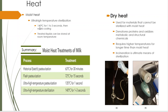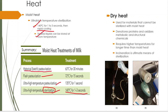Ultra-high temperature: 140°C for 1–3 seconds, then cooled quickly and stored at room temperature. Louis Pasteur originally developed the batch method — 63°C for 30 minutes. The flash method is 72°C. Ultra-high temperature is 135°C for 1 second. Ultra-high temperature sterilization — 140°C for 1–3 seconds — kills everything, even heat-resistant microbes.